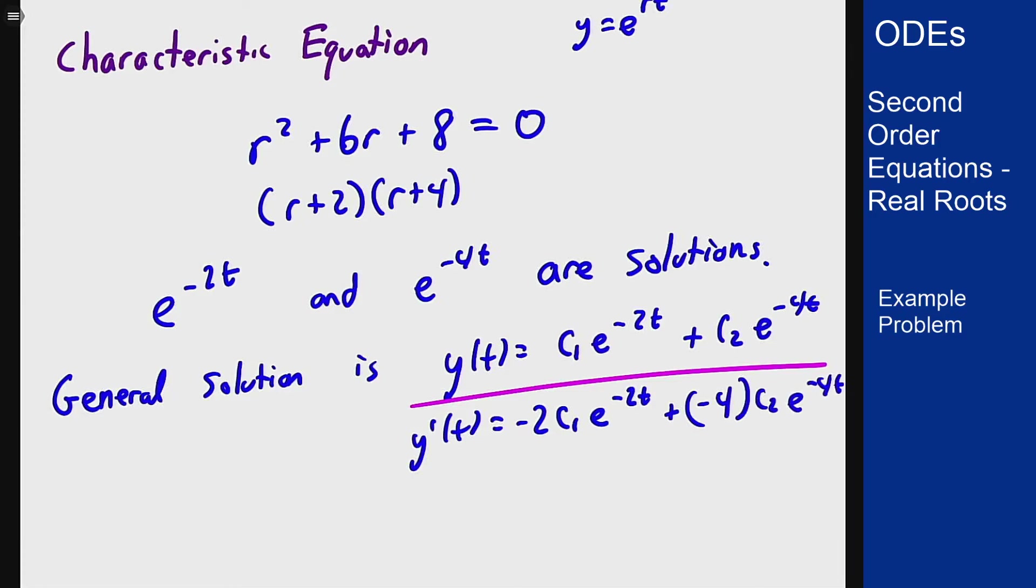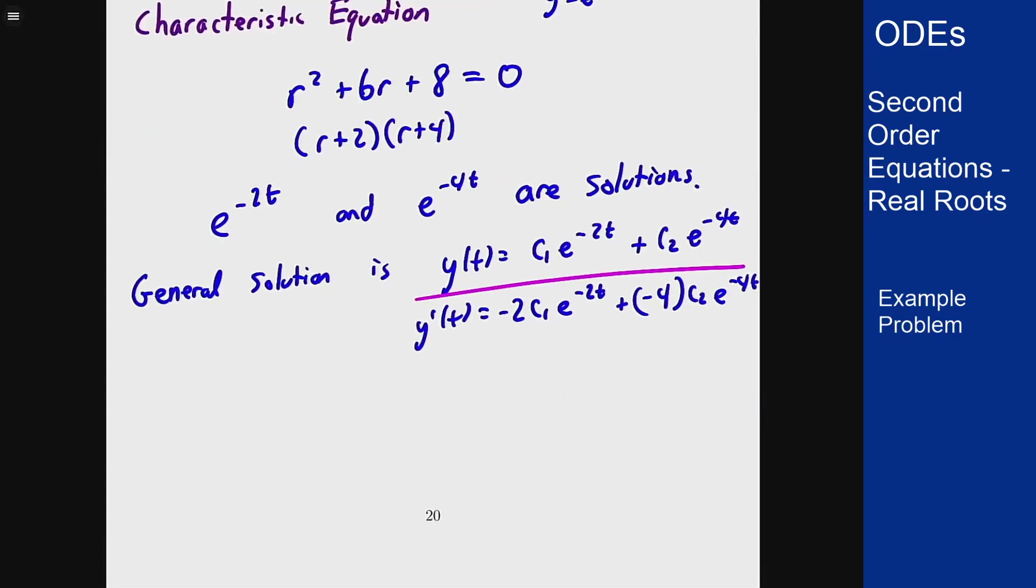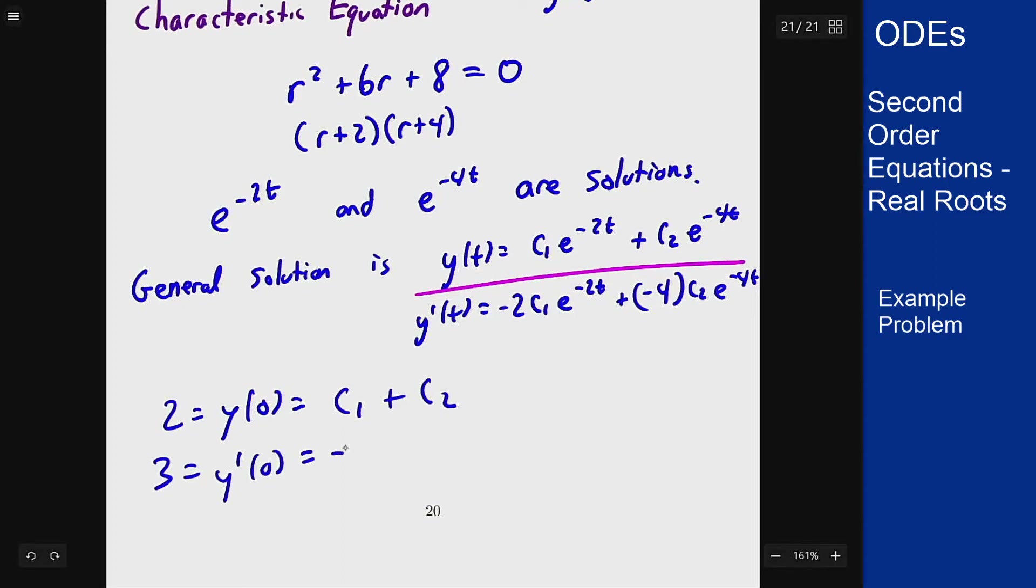Now our initial conditions here were y of 0 is 2 and y prime of 0 equals 3. We can plug 0 into both of these functions to see what we get. So because we want 2 to equal y of 0, this is the same thing as plugging 0 into the y function, which will give me c1 plus c2. And we want y prime of 0 to be 3, which is negative 2 c1 minus 4 c2.